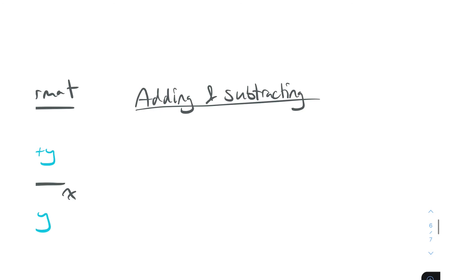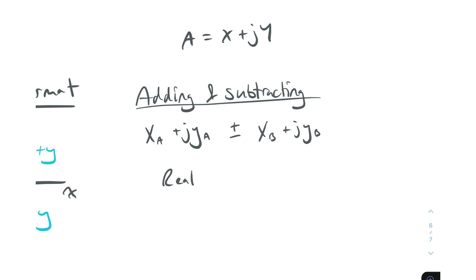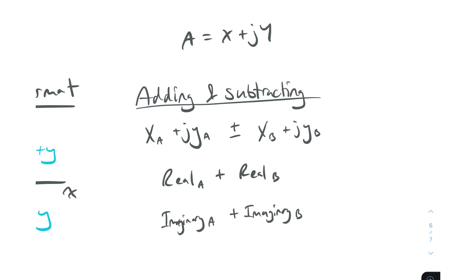In rectangular format, a equals x plus jy. If we have two complex numbers — voltage A as xa plus jya and voltage B as xb plus jyb — to add or subtract them we simply take the real components and add or subtract them together, and then take the imaginary components and add or subtract them together. That result is our final answer.